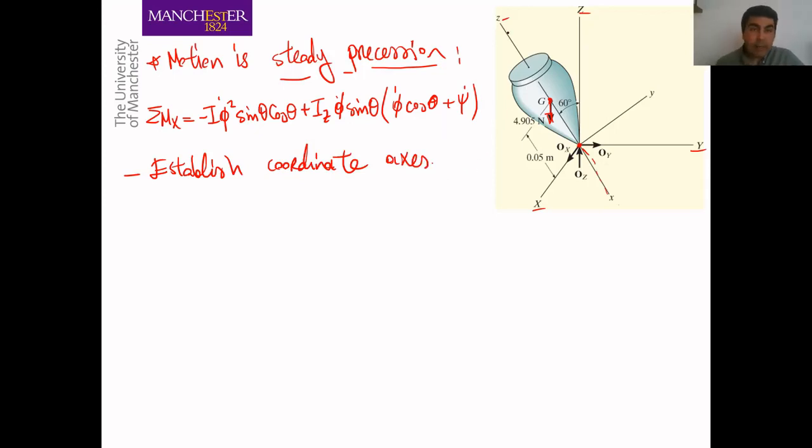The positive Z axis, you can see, is in the direction of spin. So we have a spin here, this is our spin. So our top is spinning and our positive Z axis is along the spin direction. And positive Z axis here is along the direction of precession. And the positive X axis here, you can see, is in the direction of total moment in X.